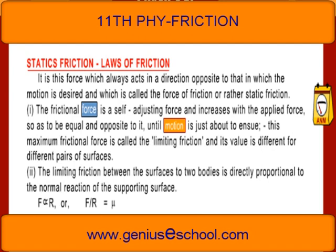Static Friction: It is the force which always acts in a direction opposite to that in which the motion is desired, called the force of static friction. The frictional force is a self-adjusting force and increases with the applied force, so as to be equal and opposite to it until motion is just about to ensue. This maximum frictional force is called the limiting friction, and its value is different for different pairs of surfaces.